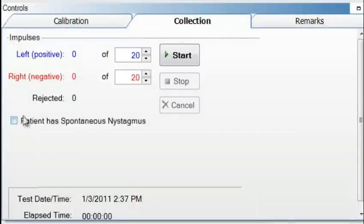For patients with spontaneous nystagmus, select the checkbox patient has spontaneous nystagmus. This prevents good impulses from being rejected inappropriately.